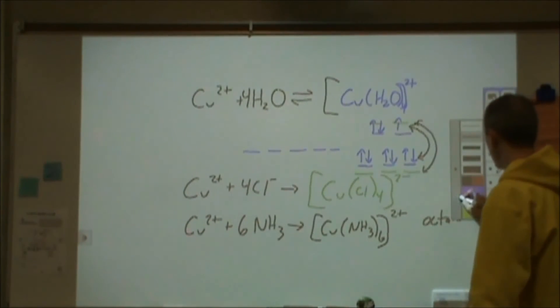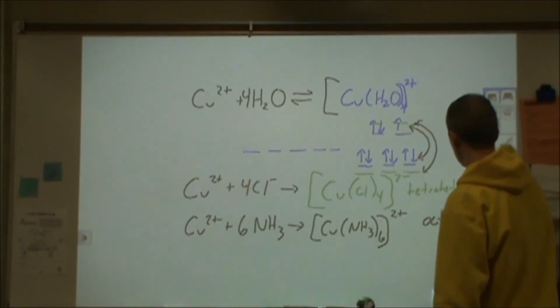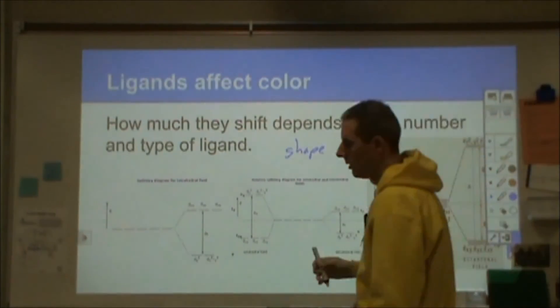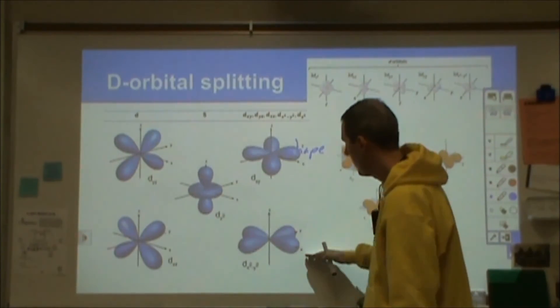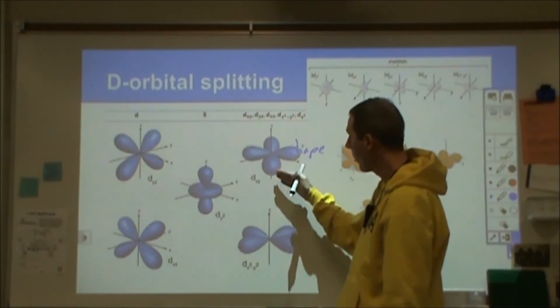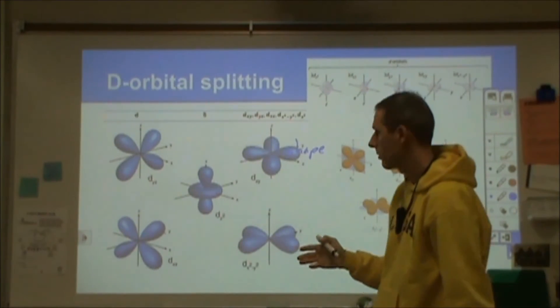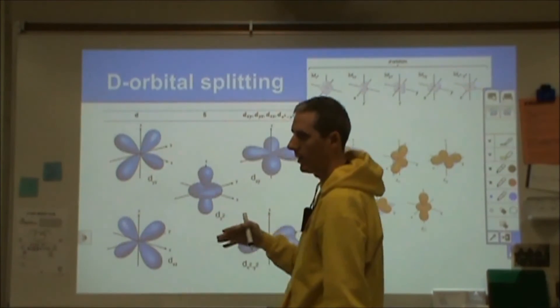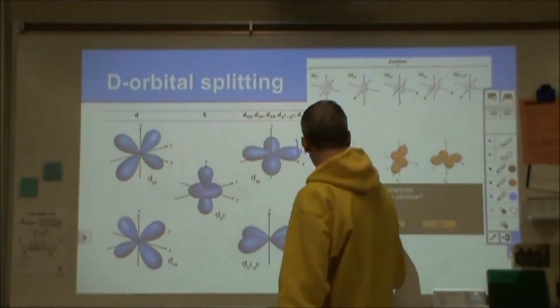But the chloride complex here might have gone into a tetrahedral scheme. If we look back at our pictures then, for an octahedron and a tetrahedron, an octahedron is going to be along these axes, or we could rotate this so it's in between the axes. But a tetrahedron is going to affect the other ones differently.